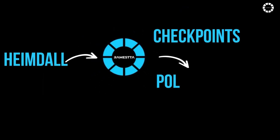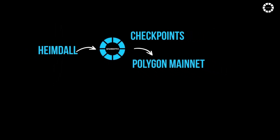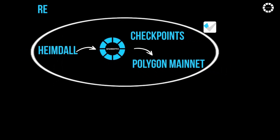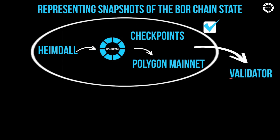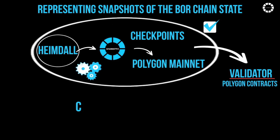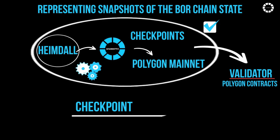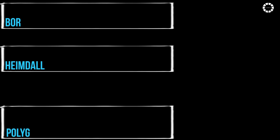Heimdall commits Romesta Network checkpoints to the Polygon mainnet. Checkpoints are vital components of the Romesta Network, representing snapshots of the Bohr chain state. These checkpoints are attested by a majority of the validator set before being validated and submitted on Polygon contracts. Heimdall manages checkpoint functionalities using the checkpoint module and coordinates with the Bohr chain to verify checkpoint root hashes when a new checkpoint is proposed.